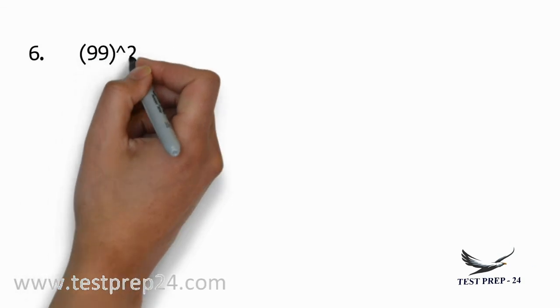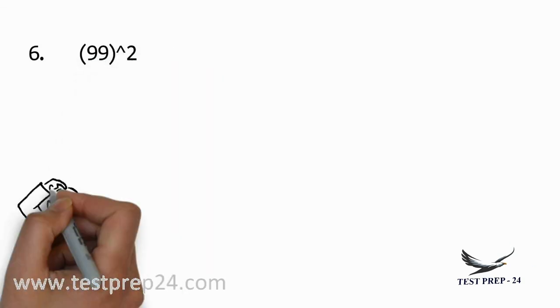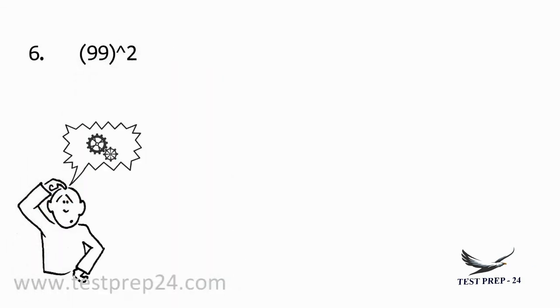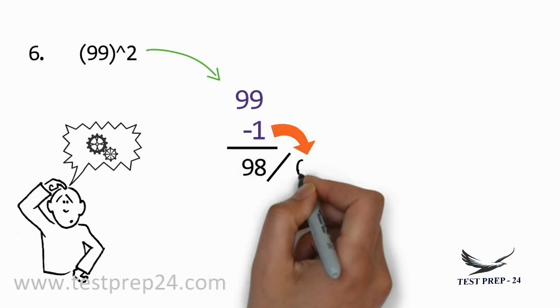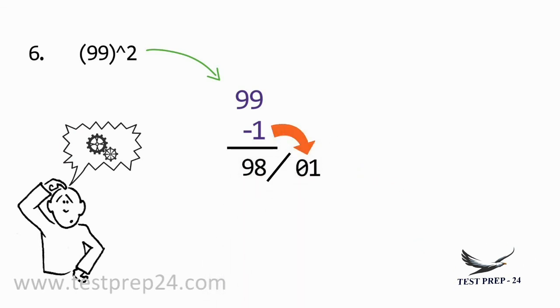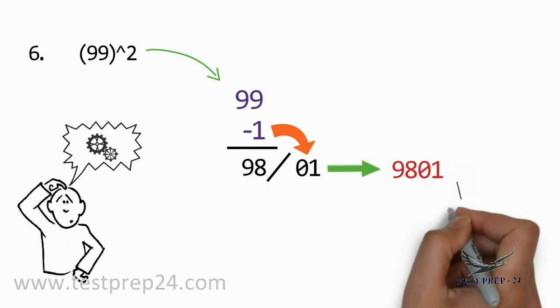Next example: 99 whole square. This 99 is 1 less than 100, so 99 minus 1 equals 98. The value of 1 square is 1. There is only one digit, so put 0 before the first digit, and your answer will be 9801.